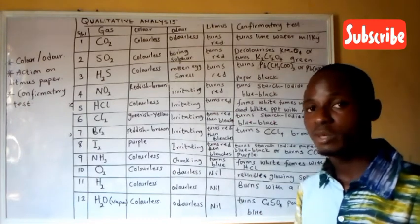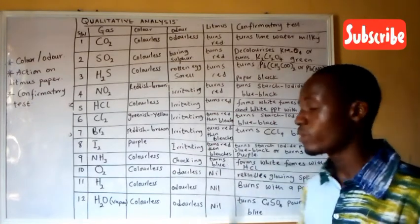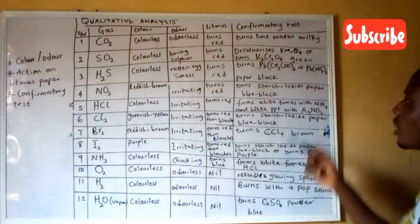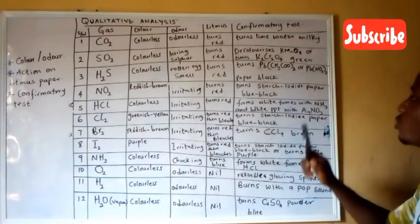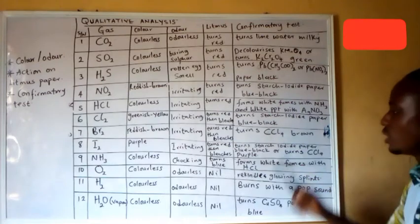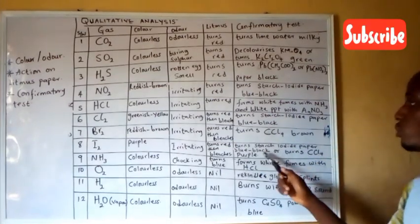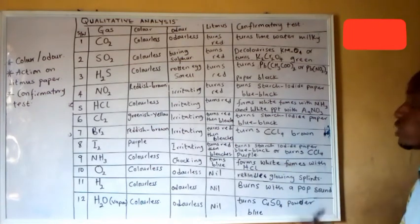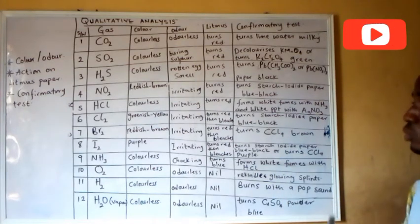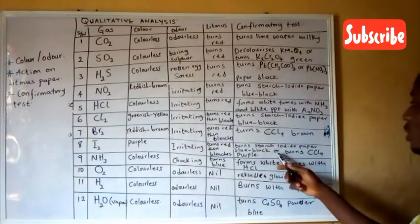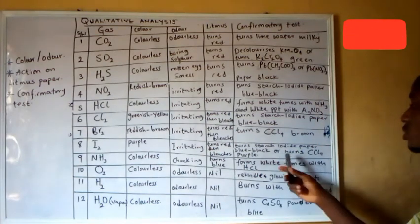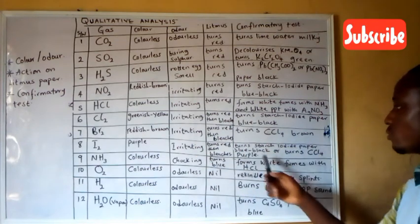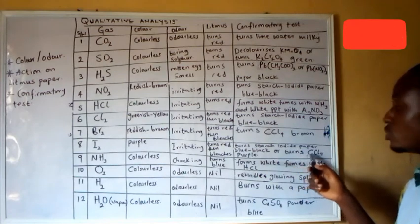Iodine is purple in color with an irritating smell. It turns blue litmus paper red and bleaches it. One confirmatory test is that it turns starch iodide paper blue-black, similar to NO2 and chlorine. To differentiate iodine, it also turns CCl4 solution purple — unlike bromine, which turns CCl4 brown.